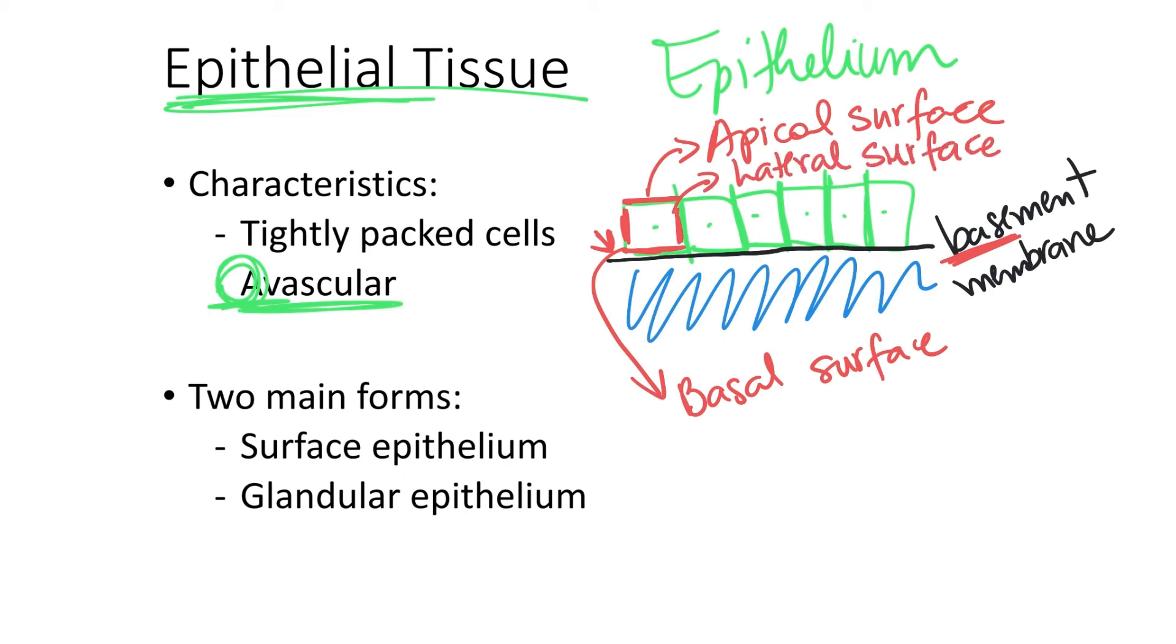Epithelial cells can be arranged in two main ways. They can be arranged in long sheets of cells, which we call surface epithelium. Epithelial cells can also be part of the secreting portion of a gland. In the secreting portion of a gland, the cells are tightly packed together with no space for blood vessels.